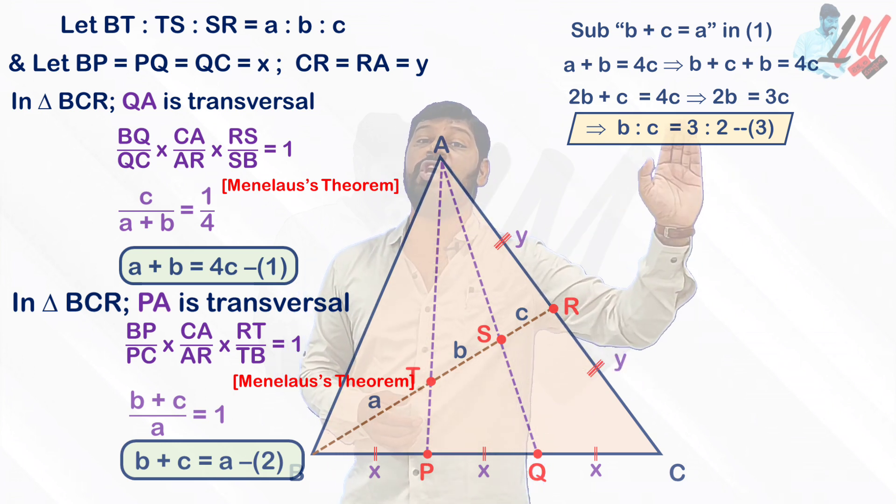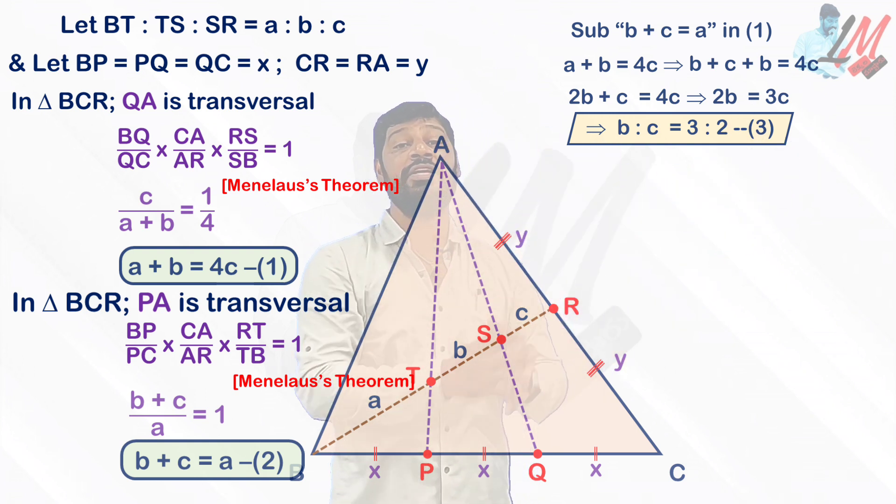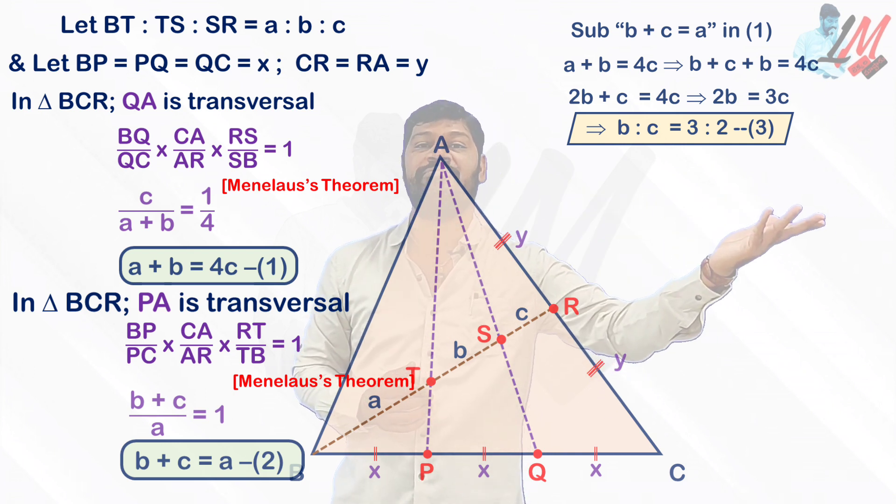So B is to C equal to 3 is to 2 we get. From this ratio you can get the value of B in terms of C or value of C in terms of B also.